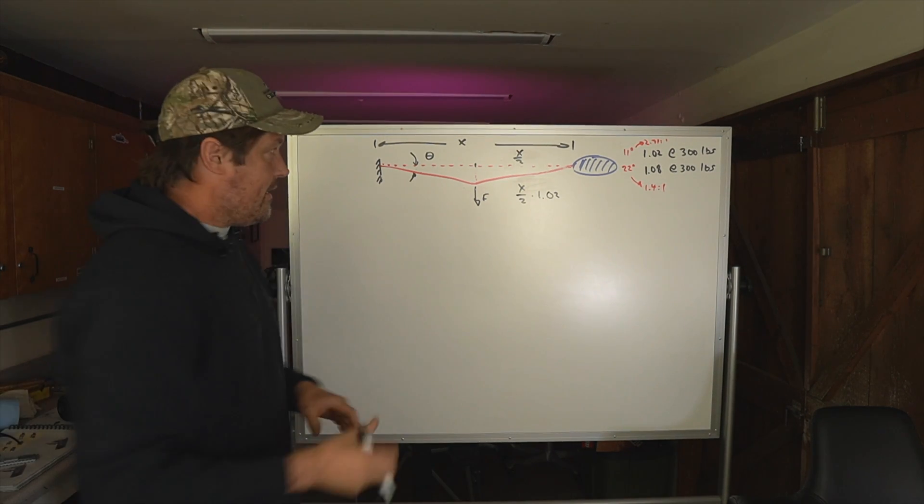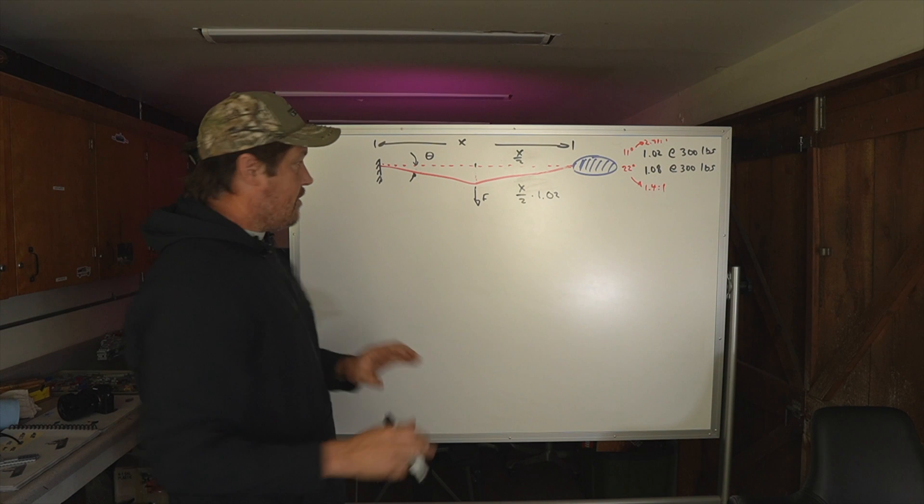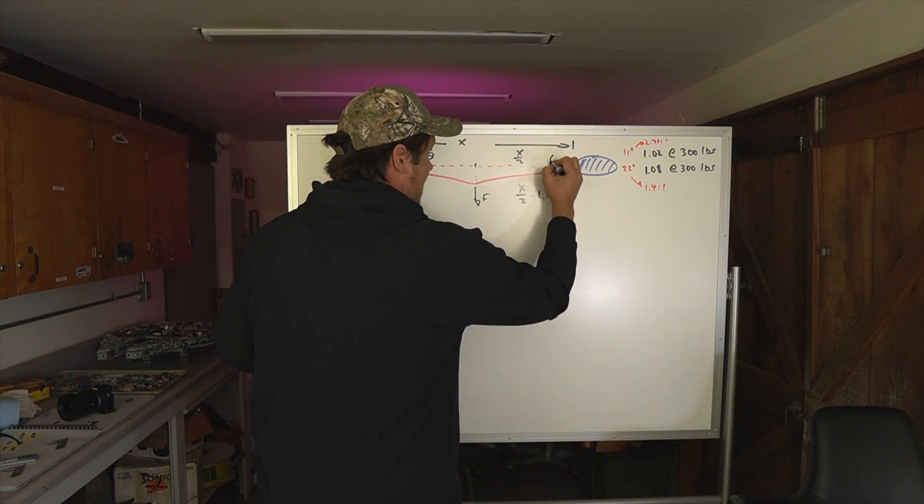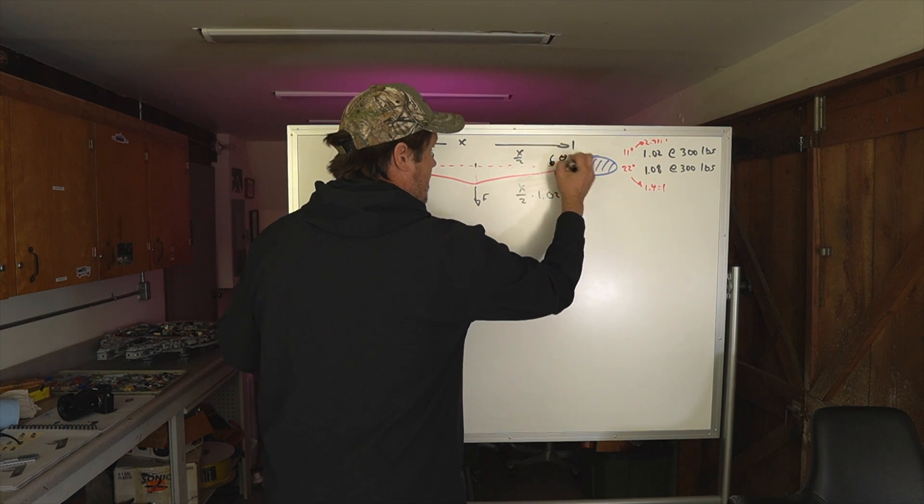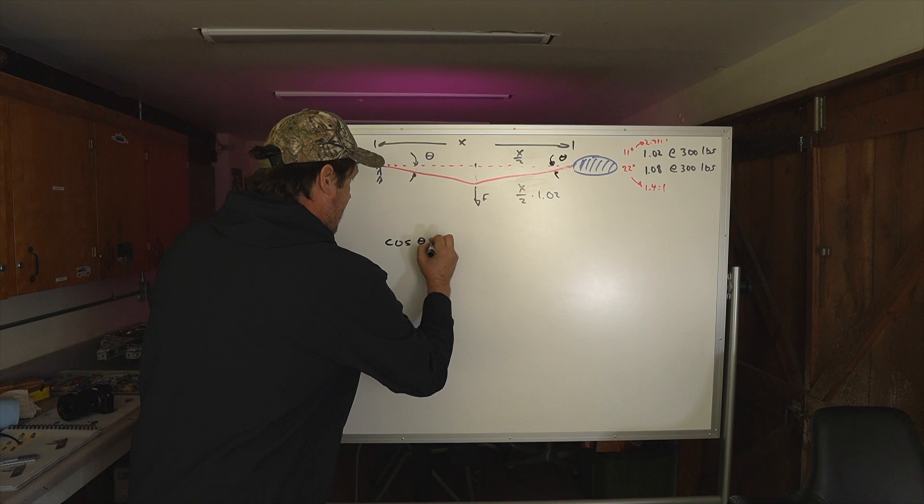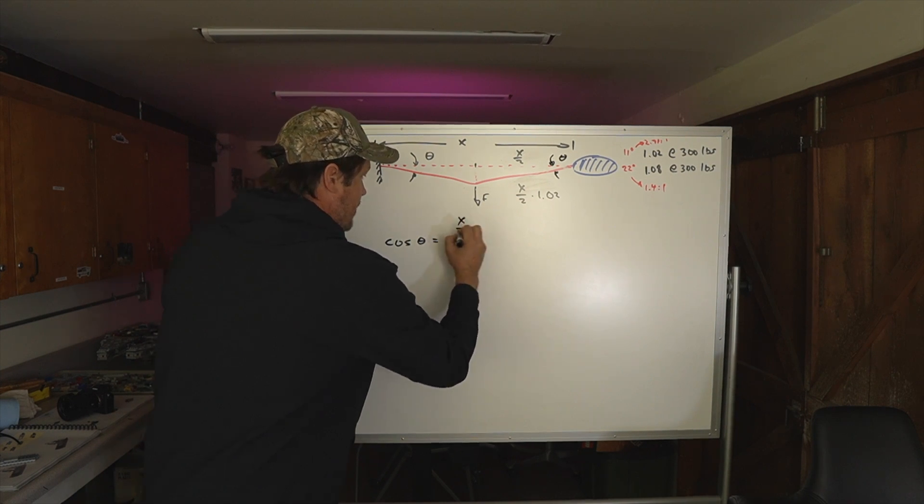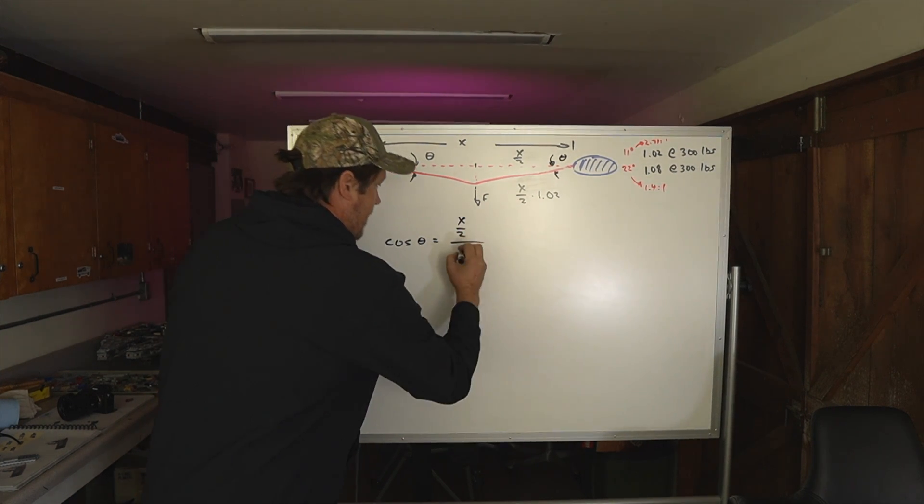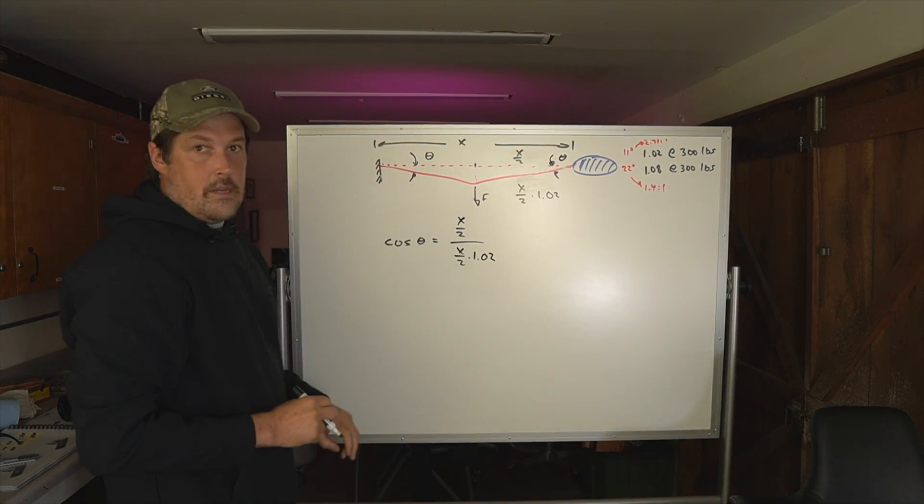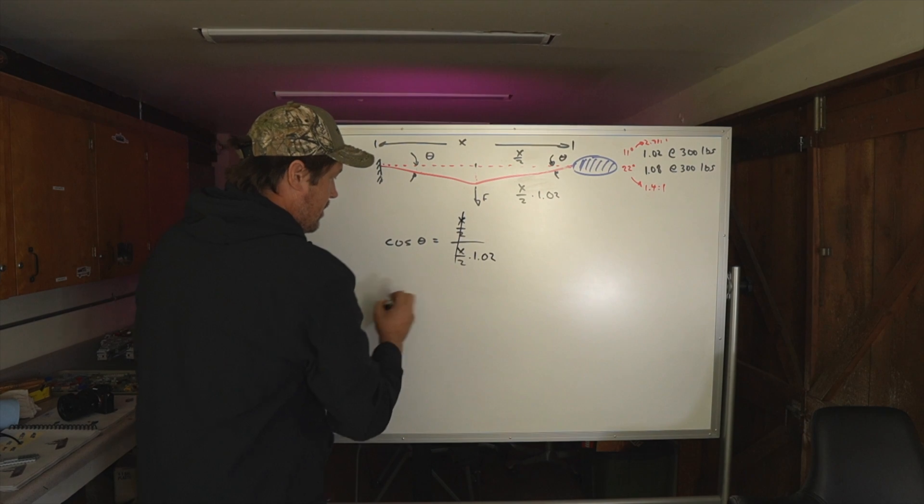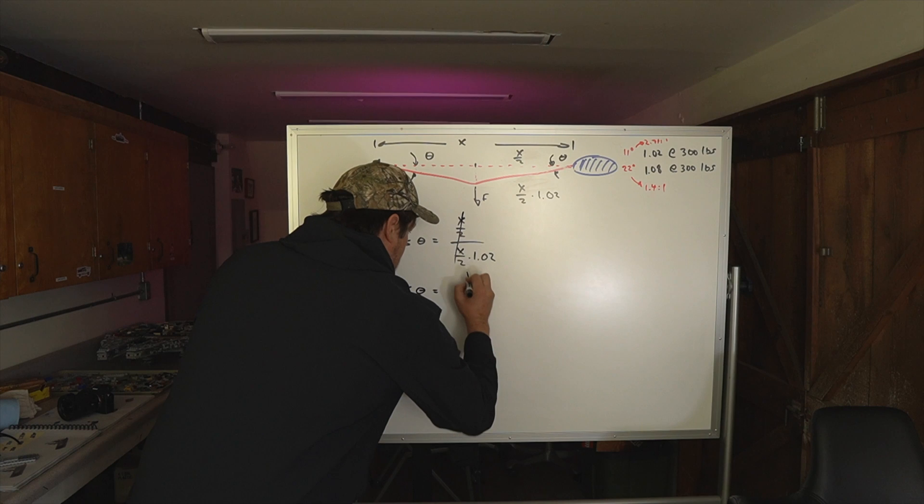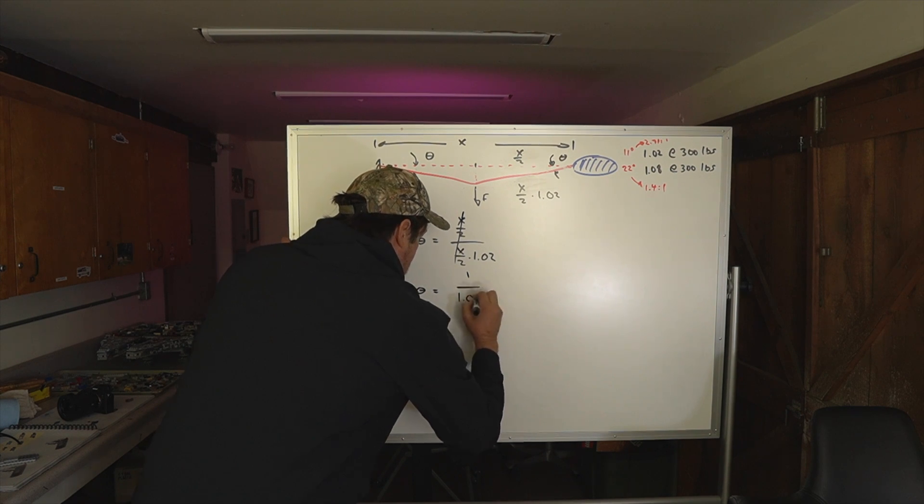So based on some trigonometry, and those of you who don't know trig, this will be easy. The rest of you can just follow along. The cosine of this angle, this is the angle theta that we used in the last part. The cosine of theta is X over 2 divided by X over 2 times 1.02. These two things cancel. So I get the cosine of theta is 1 over 1.02.